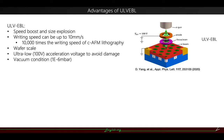here I introduce the ultra-low voltage electron beam lithography as a method. This ultra-low voltage EBL will introduce a speed boost and size explosion to create conducting structures at the LAO-STO interface. The writing speed can be up to 10 millimeters per second, which is 10,000 times the writing speed of conductive AFM lithography.